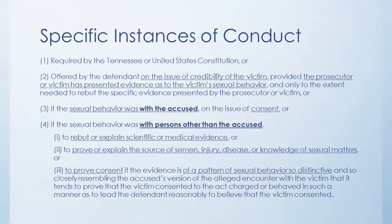The second exception is if the proposed evidence is introduced to show the credibility of the alleged victim. This is basically saying we need to show the jury why they should or should not believe this person. The prosecutor has to ask certain questions and the judge can limit how far you can go with it, but this is the second exception that allows specific instances.